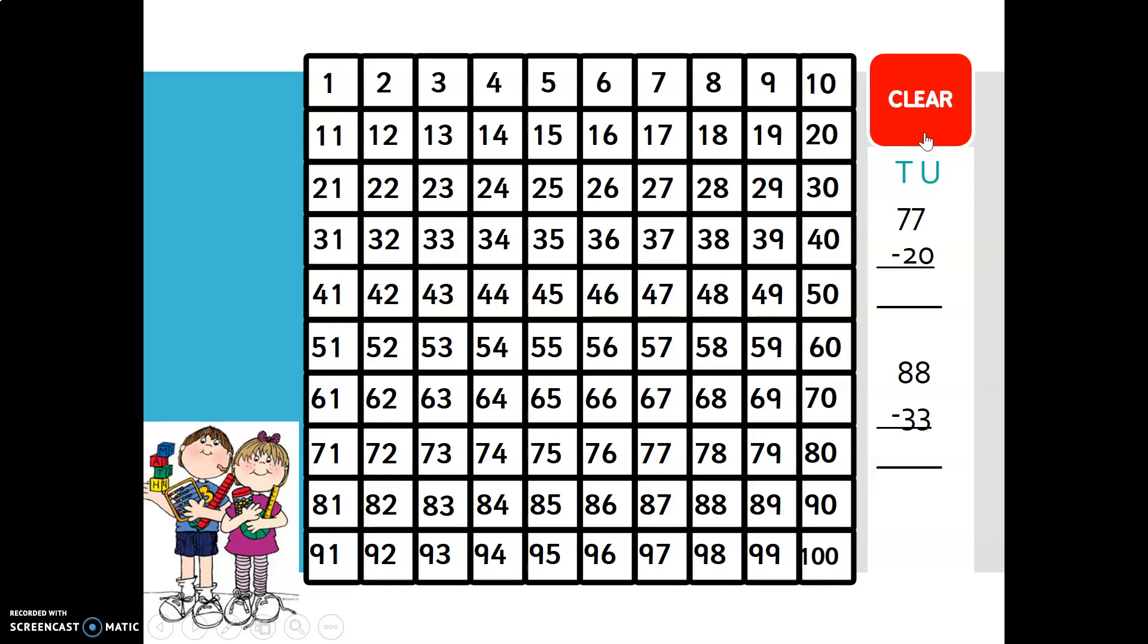So let's look at subtraction using the 100 square. There are a couple of equations here and I'll show you how to subtract using the 100 square. The first one is 77 minus 20. So if we look at 77, we click it here. And 20, let's break 20 down into 10s and units. There are two 10s and no units.